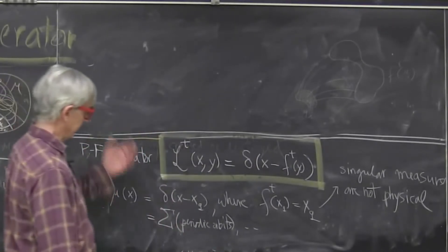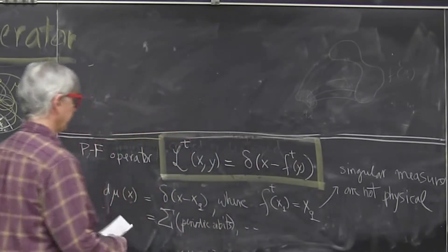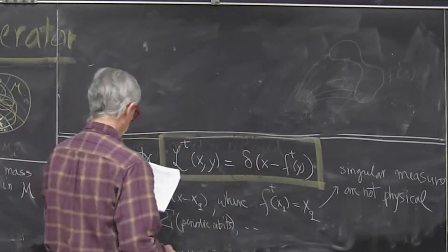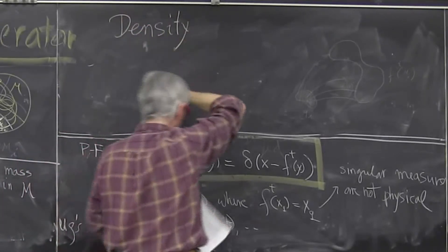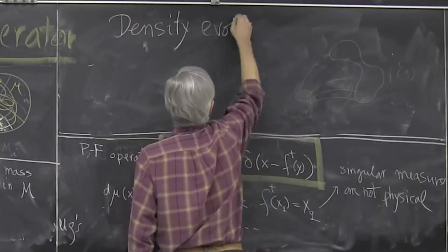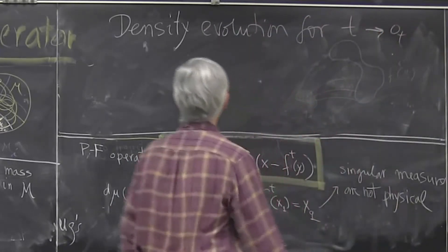But what about infinitesimal time? Here what happens, we pick up Jacobian, but what happens if you look at a very short time? So evolution, and that I find surprising actually, for time going to zero, very small times.